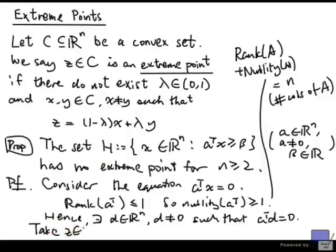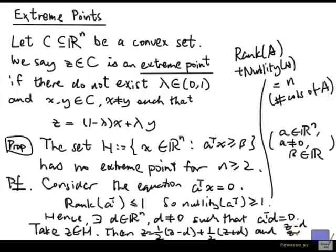Take any z in H. Then, half z minus d plus half z plus d. Well, this point is simply z and z minus d and z plus d are in H. But they are distinct because d is non-zero.